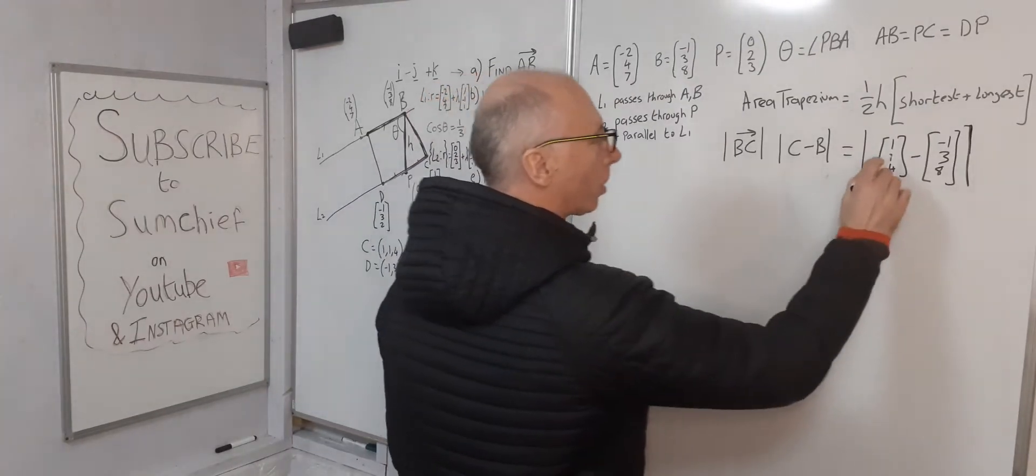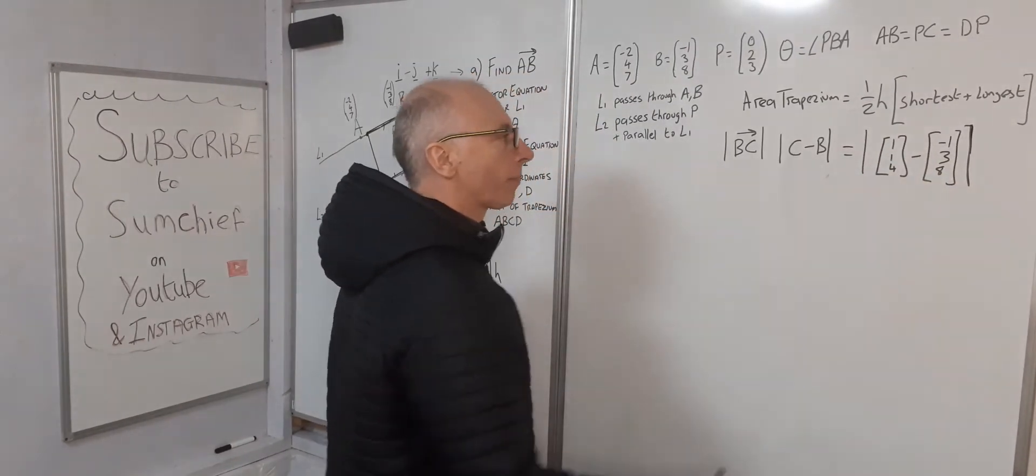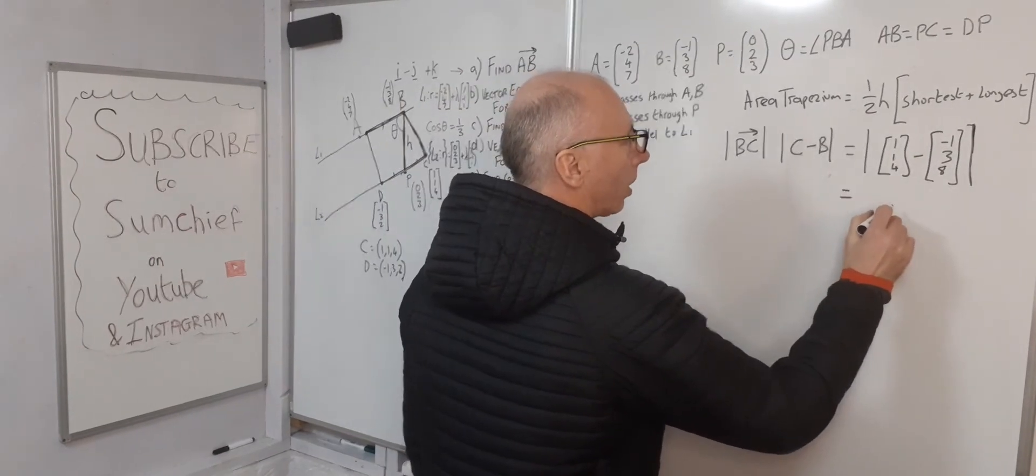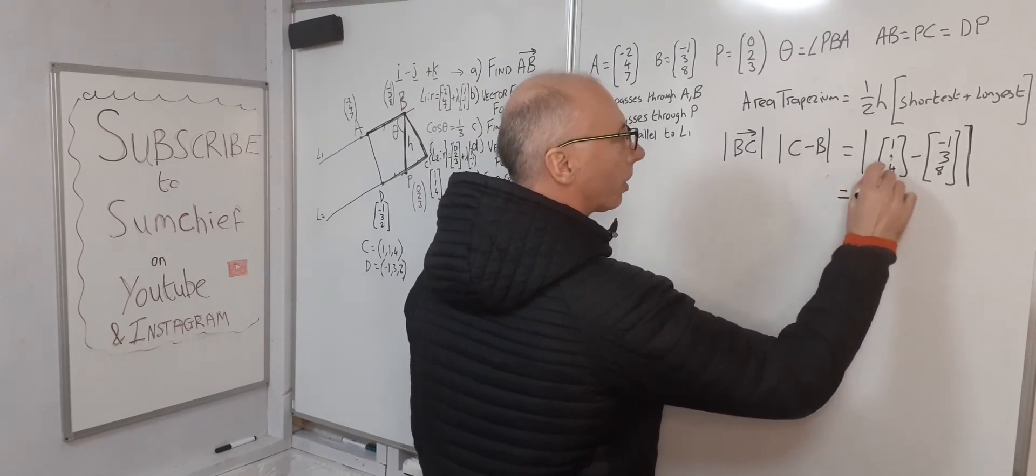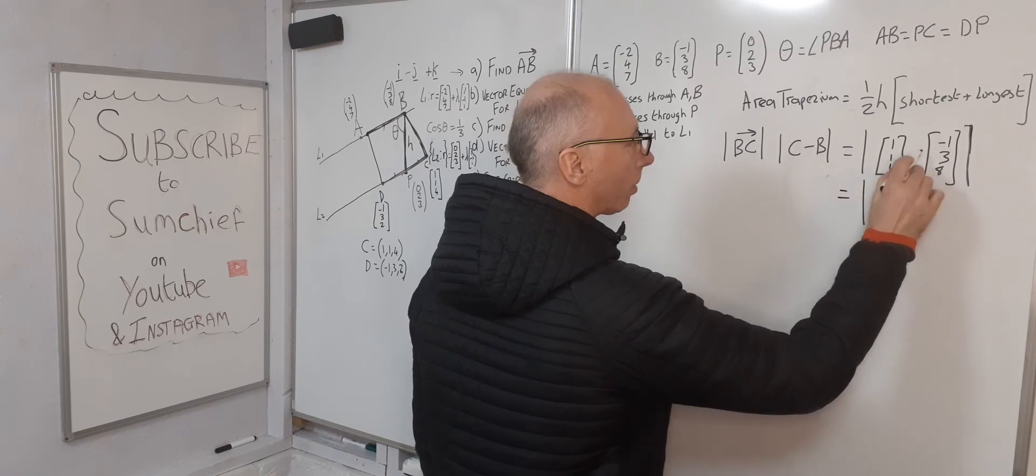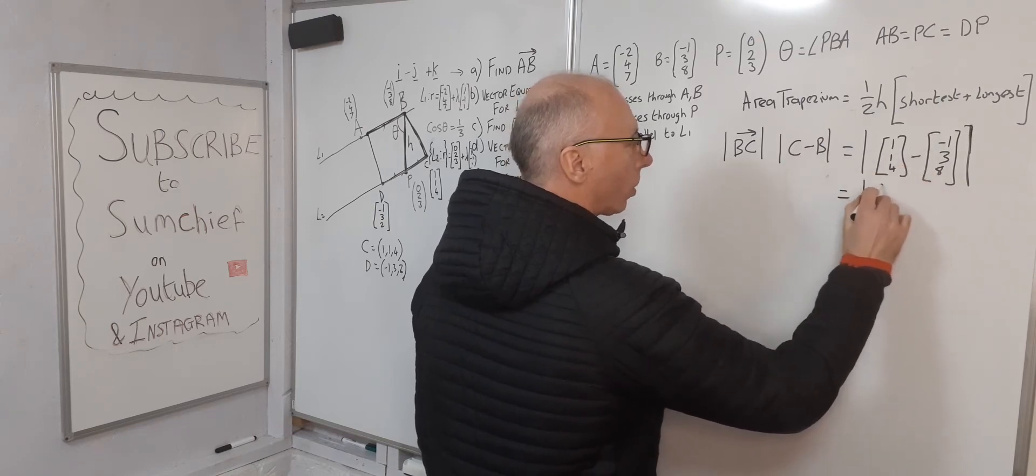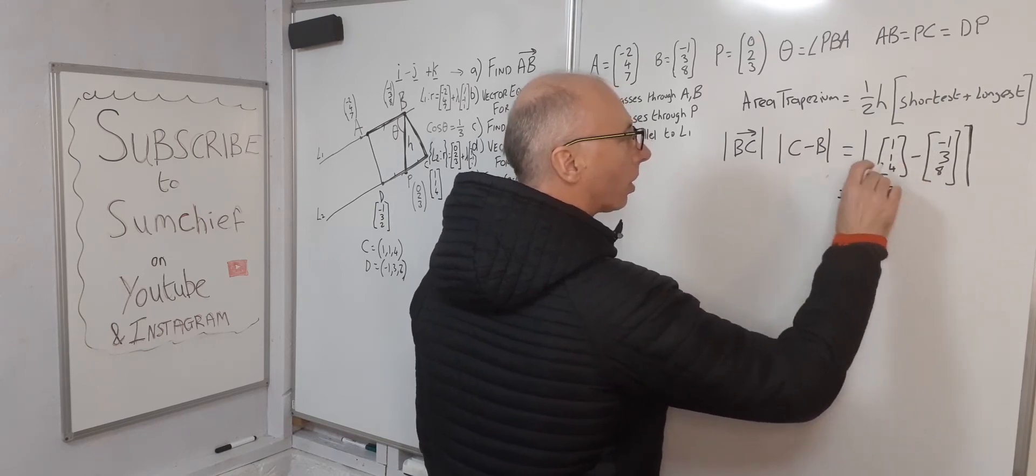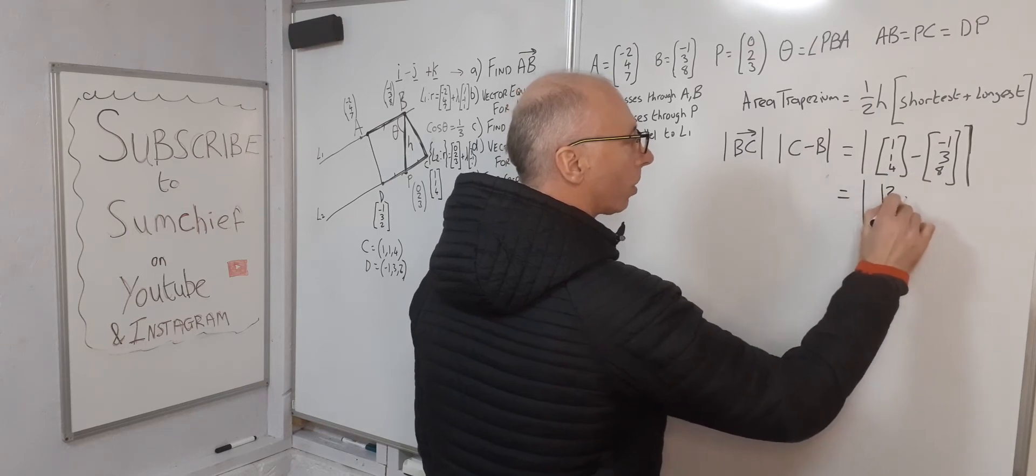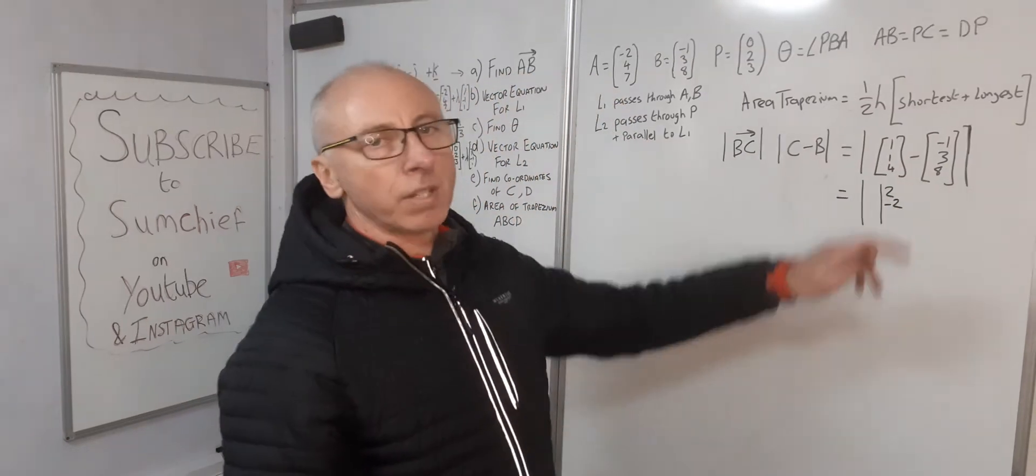Now we just take the subtraction of that. So now we've got the absolute value—sorry, the modulus—of (2, -2, -4).